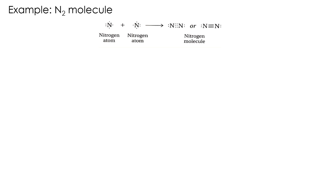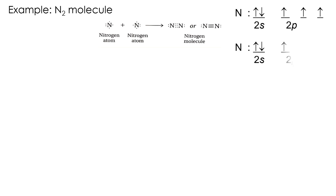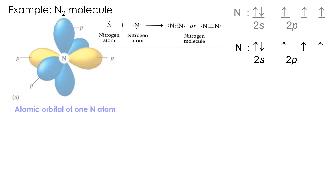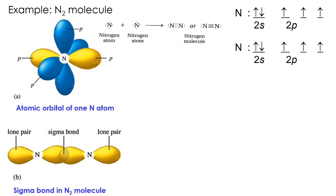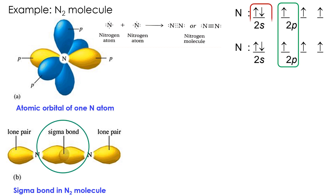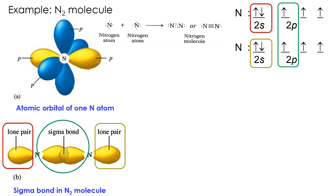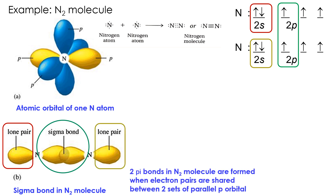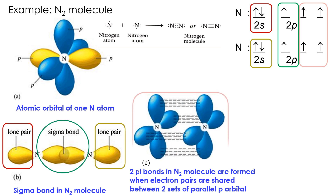Let's take the formation of a nitrogen molecule as an example. A nitrogen molecule is made of two nitrogen atoms with valence electron configuration 2s²2p³. A sigma bond is formed through head-on overlapping of two p-orbitals. The two pi bonds in the nitrogen molecule are formed when electron pairs are shared between two sets of parallel p-orbitals through side-wise overlapping. Figure D shows the total bonds formed in a nitrogen molecule.